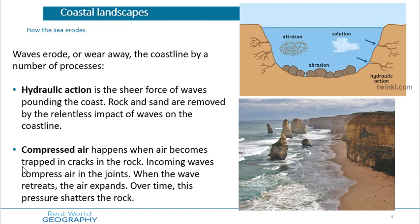The second way the coastline is eroded is by compressed air. When there's any little crack in the rock, when water hits that rock it fills that crack full of air. It's like getting a syringe, putting your thumb over the end, and trying to push it — you can't, because the syringe is full of air and your finger is stopping it being released. The same thing happens in rock cracks: the water prevents the air from leaving, creating a mini explosion. Over time this pressure continues, shattering the rock and enlarging the cracks.